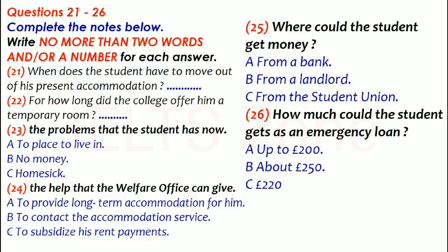Yes, it is usual in this country for landlords to ask for up to a month's rent in advance. Don't you have any money at all? Hardly any. I'm waiting for my grant cheque to be sent from the Philippines at the moment. It should have been here for me to collect when I arrived in Britain, but it seems to have been lost. You can apply for an emergency loan from the union if you want. The loan can be for up to £200, and we ask for a post-dated cheque for the same amount, so that we can recover the money once you receive your grant cheque. That would be very good.